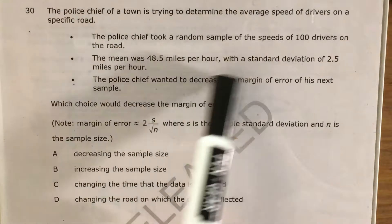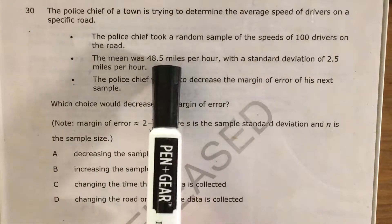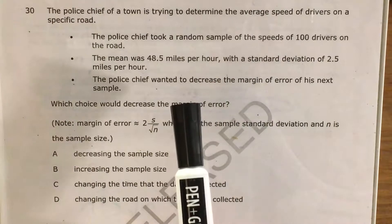The question tells us that a police chief took a random sample of the speeds of 100 drivers on the road. He got 48.5 for the mean, 2.5 for the standard deviation, and he wants to decrease the margin of error.